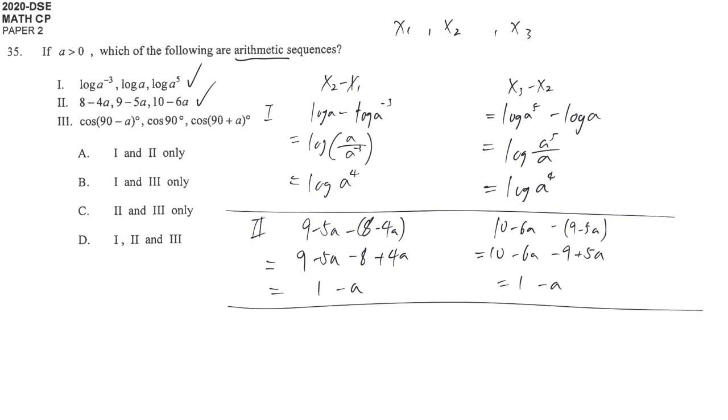Now the last one. Before we work on this, we better draw the cosine function. 90 degrees is somewhere here, 90 minus a has this height, 90 plus a has this height. These two seem symmetric. If you're not really sure, you may assign some value for a.